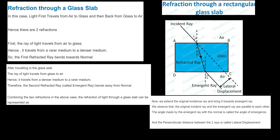Let us assume our ray is passing over the glass slab — not passing inside it. Then it will go straight. When light passes through the glass slab, it deflects towards one side. The displacement between the actual ray and the displaced ray is called lateral displacement.